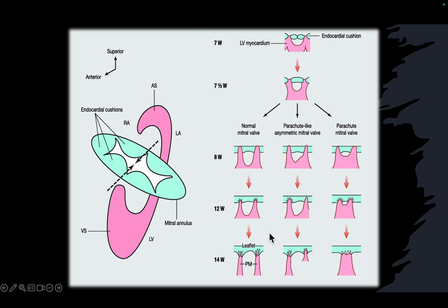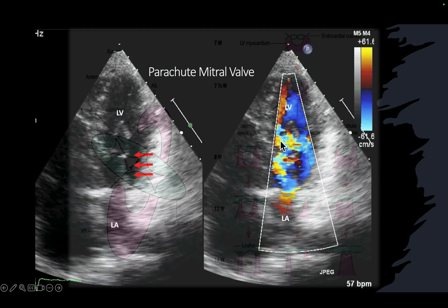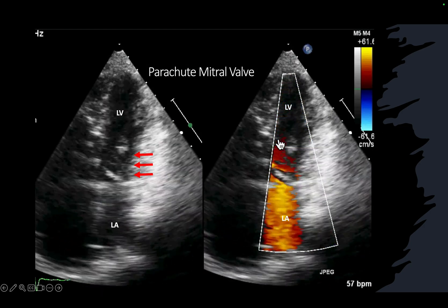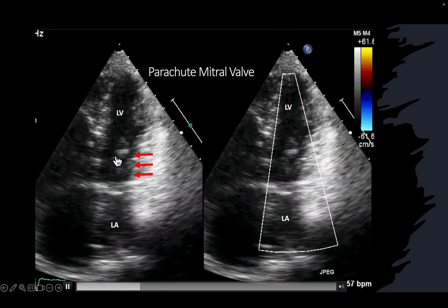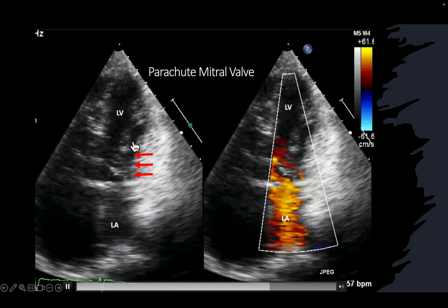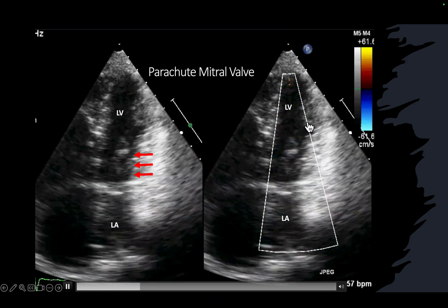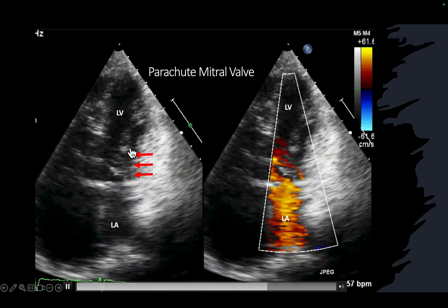If you have a single papillary muscle, this is a parachute mitral valve. If you see a single large muscle and one rudimentary small muscle, then we have another terminology called parachute-like asymmetric mitral valve. Both are grouped together under the parachute mitral valve category. Showing you a case — it really looks like a parachute. The chordae are fused and attached to a single papillary muscle, and that is why it is called a parachute mitral valve.